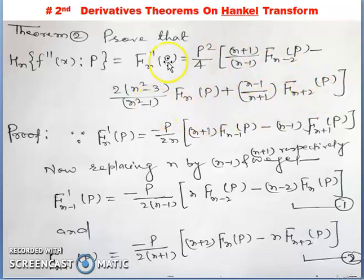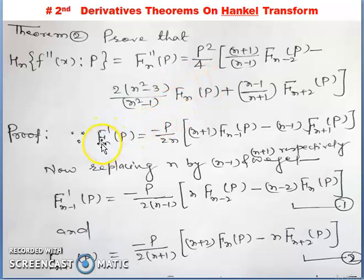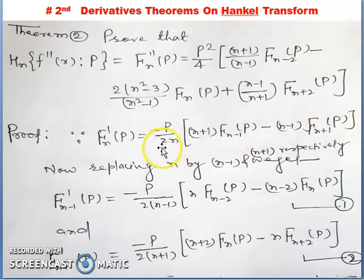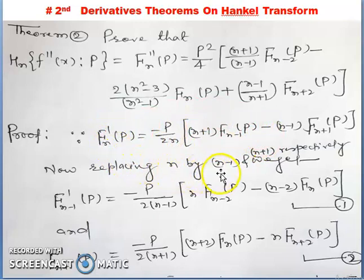For the proof of the second derivatives of the Hankel transform, we go through the first derivatives result. As we just proved: fn'(p) = -p/(2n) * [(n+1)*f_{n-1}(p) - (n-1)*f_{n+1}(p)]. In this first derivatives result, we replace the order n by n-1 and by n+1 respectively.